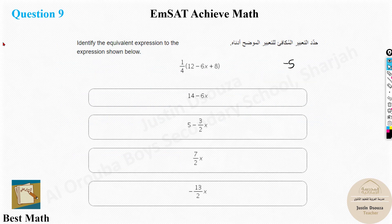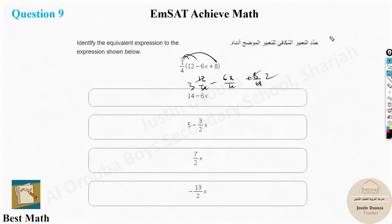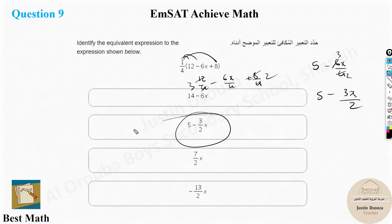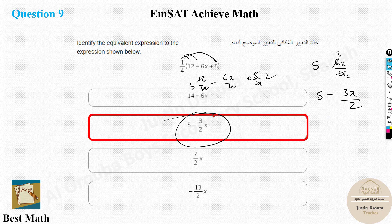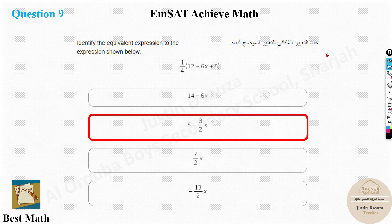Question 9: Identify the equivalent expression. Using the distributive property, multiply quarter throughout: 12/4 minus 6x/4 plus 8/4, giving 3 minus 1.5x plus 2, which simplifies to 5 minus 3x/2. This is the answer. There is also a calculator shortcut method I'll explain.